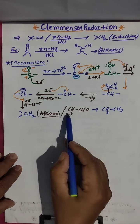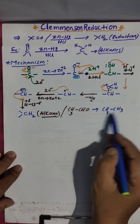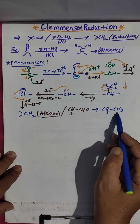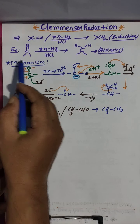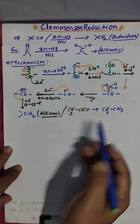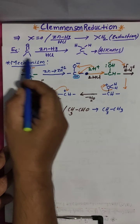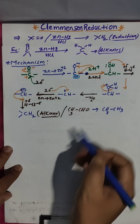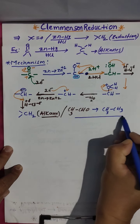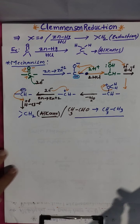However many carbon atoms are there in the starting aldehyde or ketone, you get an equal number of carbons in the alkane product. If you are taking formaldehyde — which has one carbon with two hydrogens — you are getting methane. This is the process — a very simple and very important reaction.